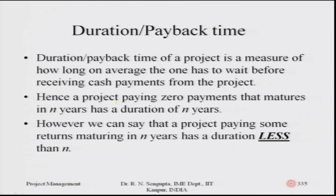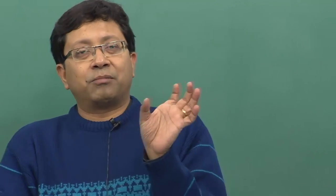A project paying zero intermediate payments that matures in N years has a duration of N years. A project paying some returns before maturity in N years has a duration less than N years — meaning the money is retrieved faster. The actual duration depends on the interest rate, the payment period, and the total amount of each payment.